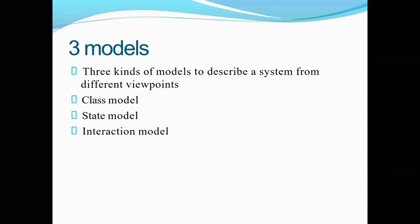Here I have three varieties of models that we will see — how each one is working, then we will do an activity on these models. My first model is the class model, the next one is the state model, and the last one is the interaction model. The model is nothing but a diagrammatic representation of any product. For the class model we do a class diagram, for the state model we do a state diagram, and for the interaction model we do activity diagrams, sequence diagrams, or use case diagrams.